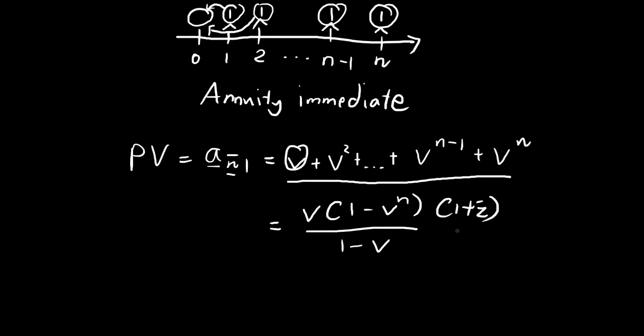So let me just multiply the numerator and denominator by 1 plus i. Notice that v is actually equal to 1 divided by 1 plus i. So these two terms cancel out. So we're left with 1 minus v to the n. And the same happens in the denominator. So we have 1 plus i minus 1. This will give us the present value of this annuity payment here.